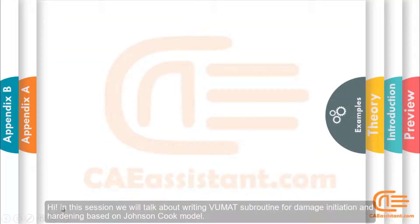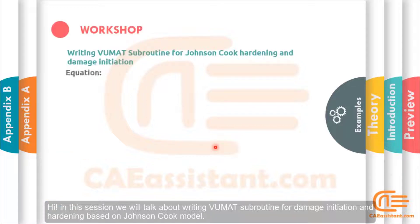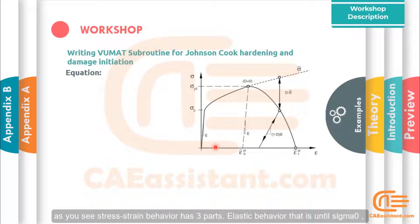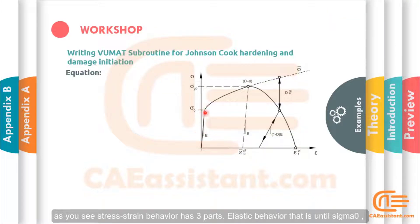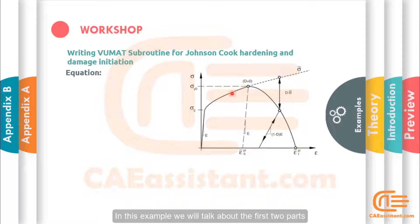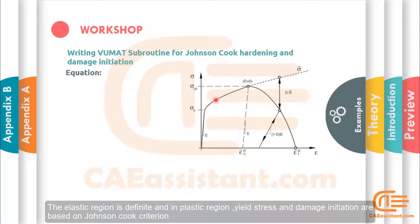In this session, we will talk about writing a VUMAT subroutine for Damage Initiation and Hardening, based on the Johnson-Cook model. As you see, stress-strain behavior has three parts: elastic behavior, up to sigma zero; plastic behavior, up to the point where D is equal to zero; and damage behavior. In this example, we will talk about the first two parts. The elastic region is definite, and in the plastic region, yield stress and damage initiation are based on Johnson-Cook criteria.